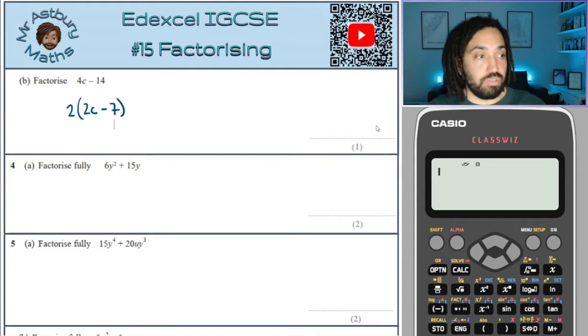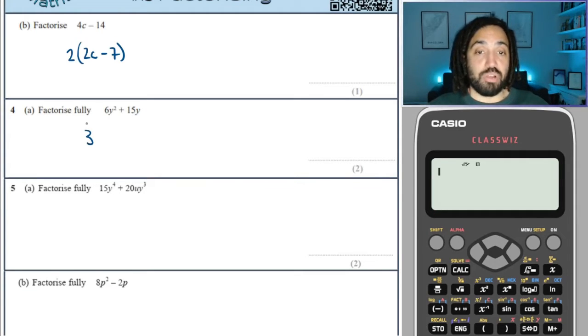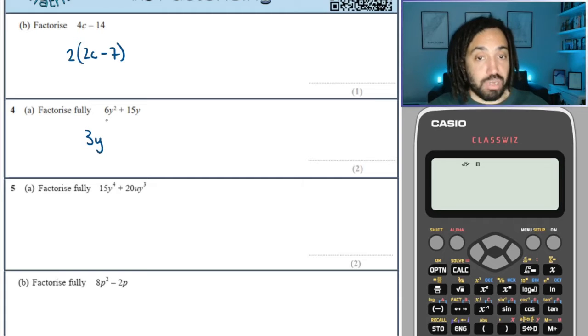Okay, let's move on. Here I'm looking numerically and I know three goes into both of them, and algebraically they both share a Y, but not Y squared because the fifteen is only Y to the one. So I can take out a 3Y.